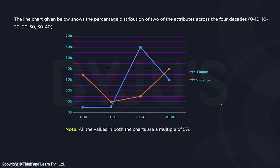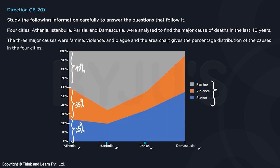The next chart is a line chart showing the percentage distribution of two attributes — plague and violence — across the four decades. Since we're talking about 40 years, each decade covers 10 years. In the decade 0 to 10, 5 percent of deaths were due to plague and 35 percent due to violence. All values in both charts are multiples of 5 percent, which helps us read the values easily.